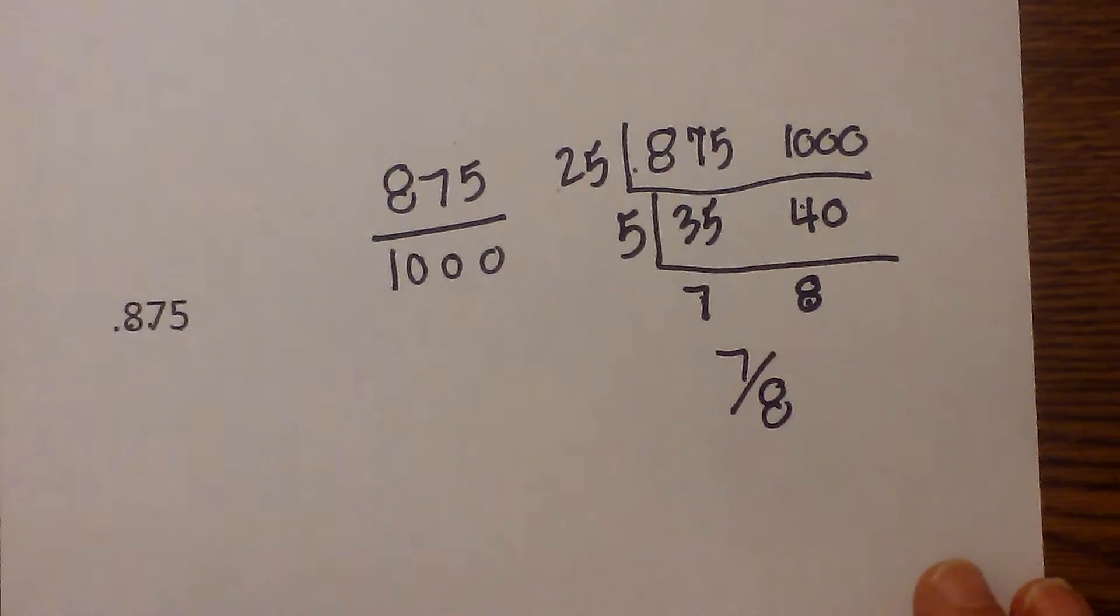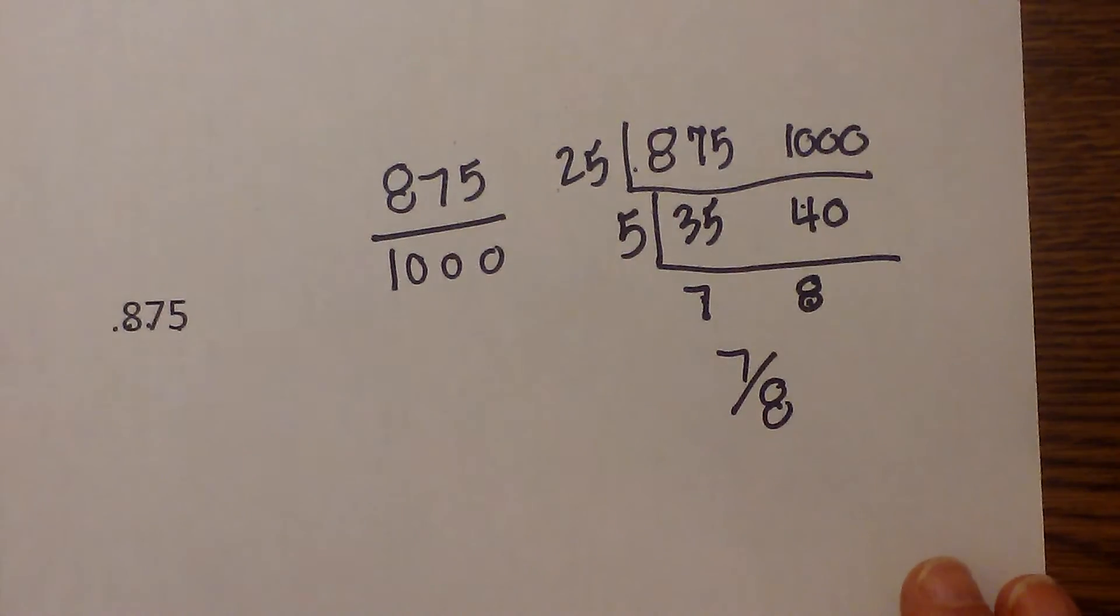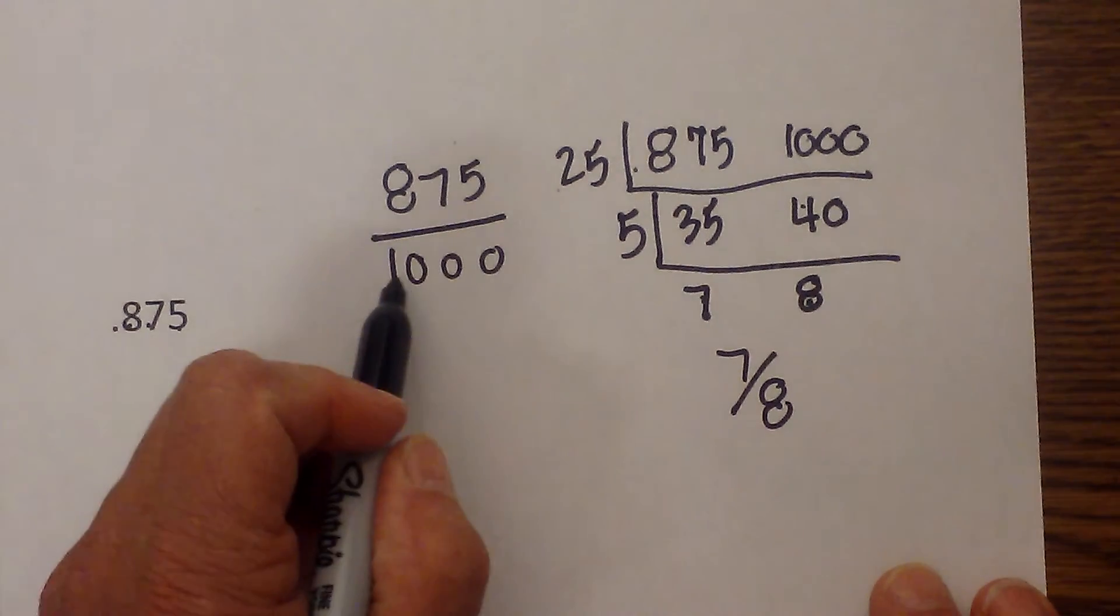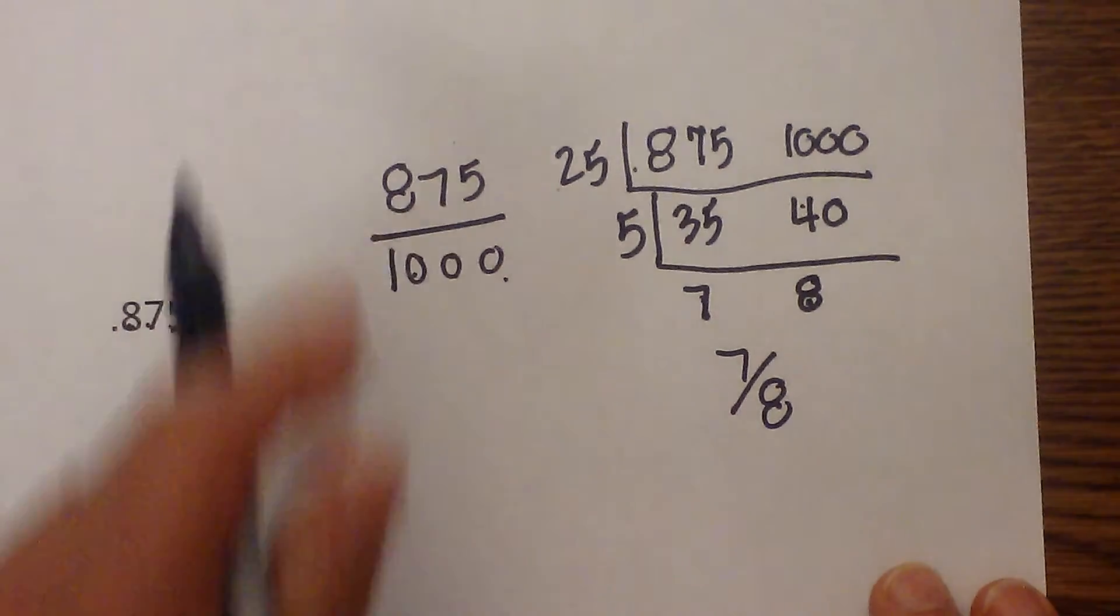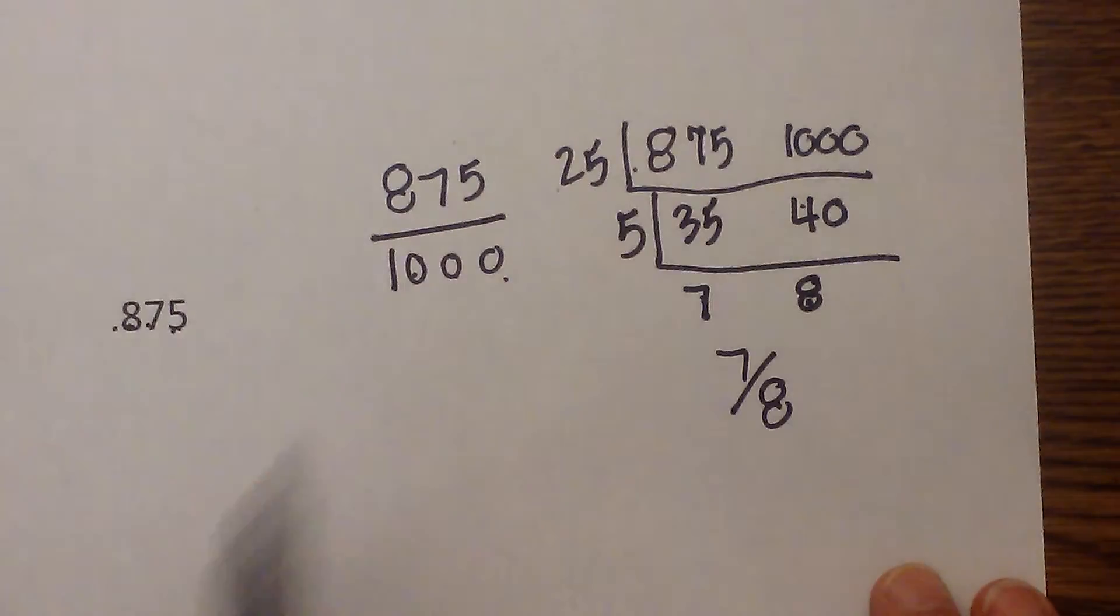So there's your shortcut for converting decimals into fractions. It takes a lot of the guesswork out. Just remember, write a one, count how many numbers are to the right, add zeros, and then simplify. You can use this method for simplification. I hope this helps and thanks for watching. MooMooMath uploads a math, science, or motivation video every day.